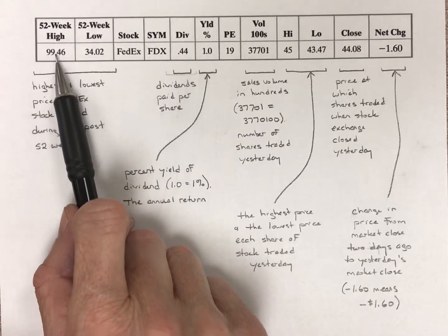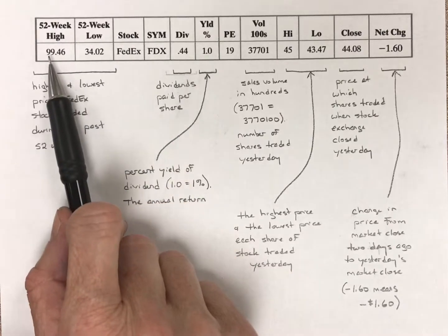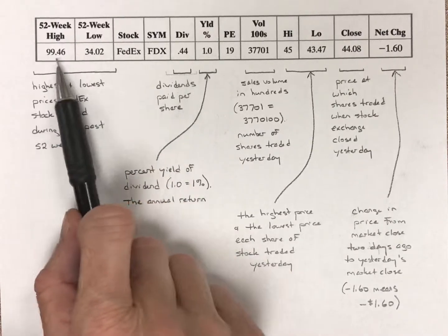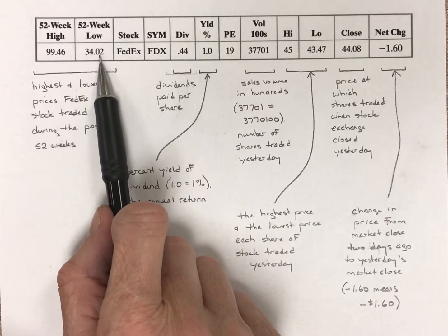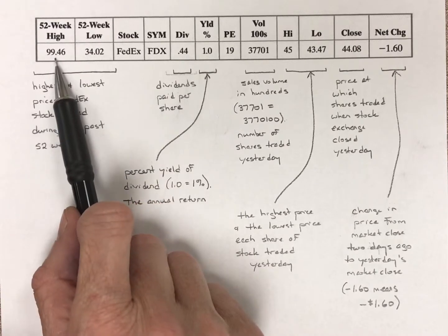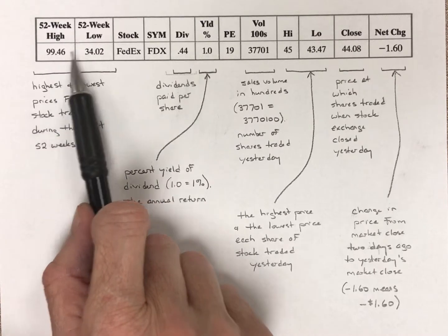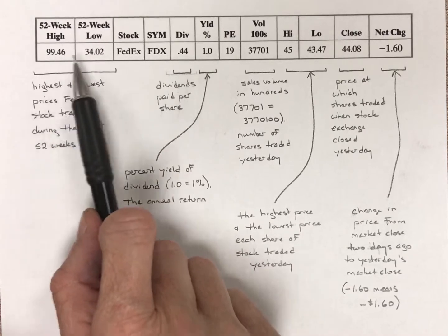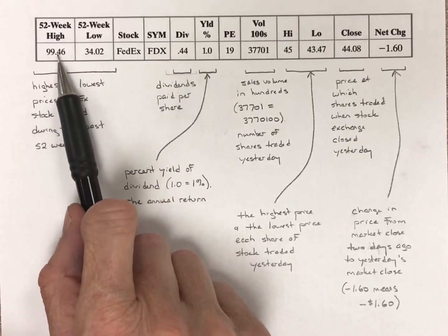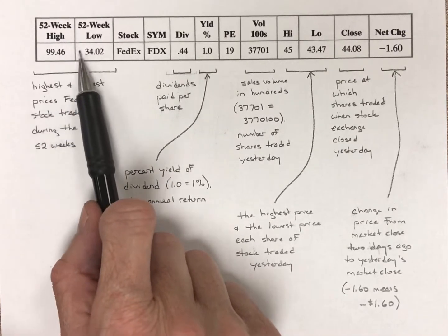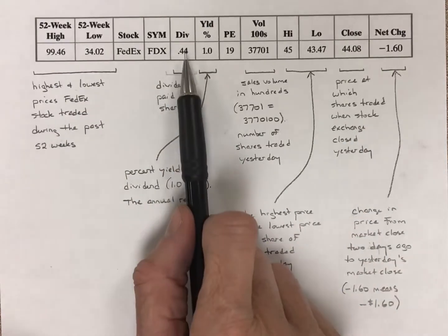It looks like Federal Express, FedEx, had that's quite a lot of variation. In a year, a low of $34.02 for one share to a high of almost $100 for one share. That's quite a lot, a lot of variability, quite a difference in the two in this case.